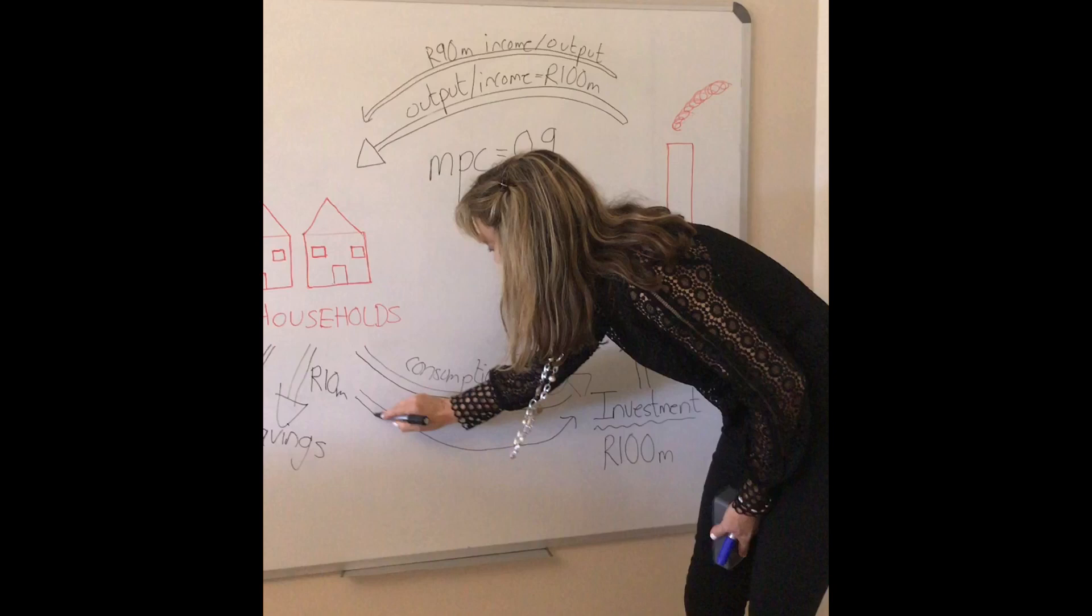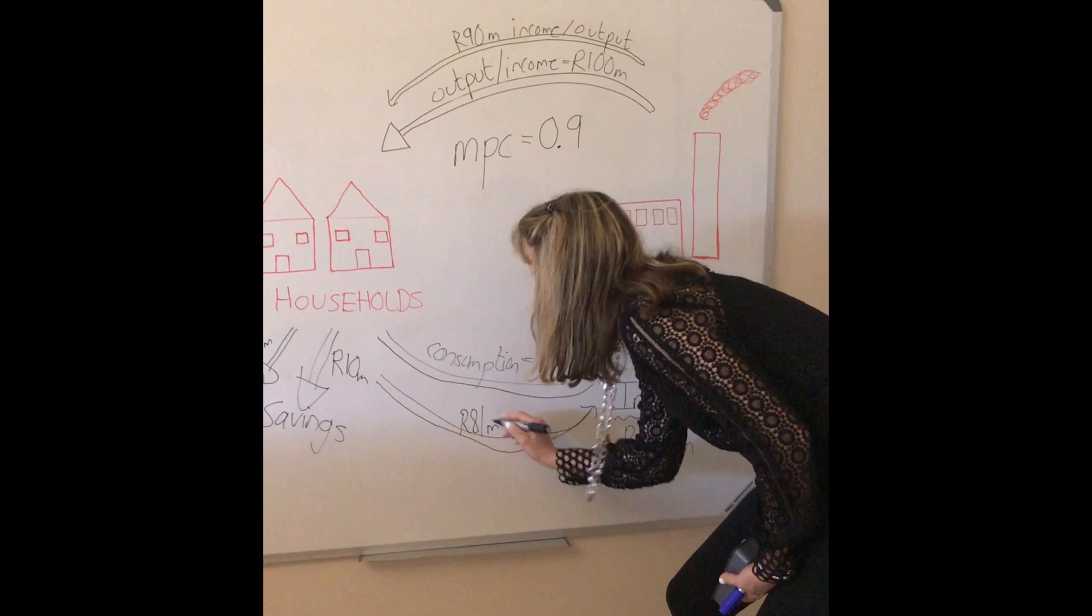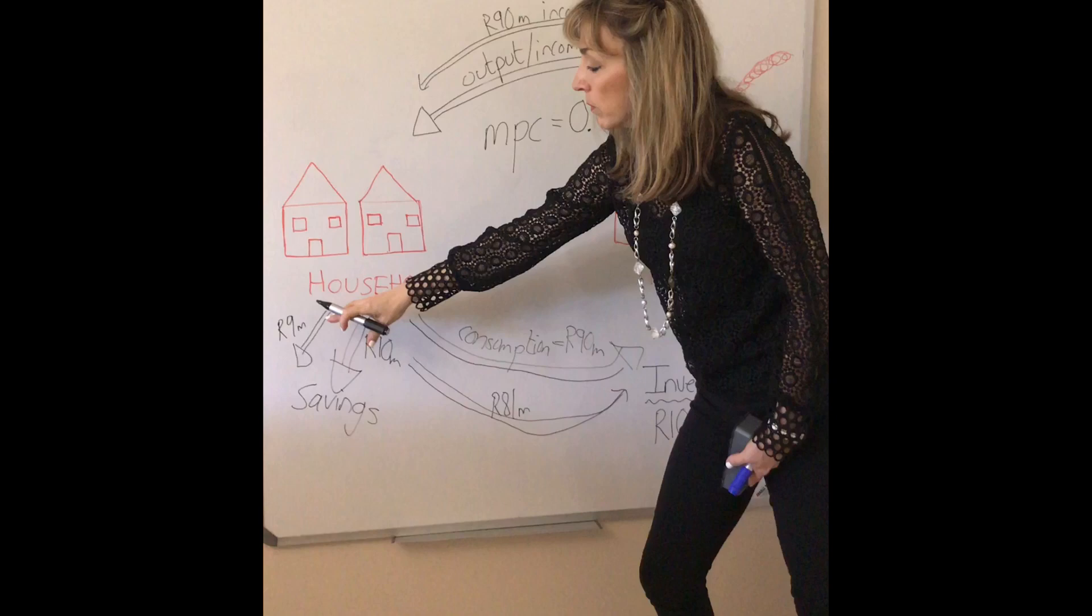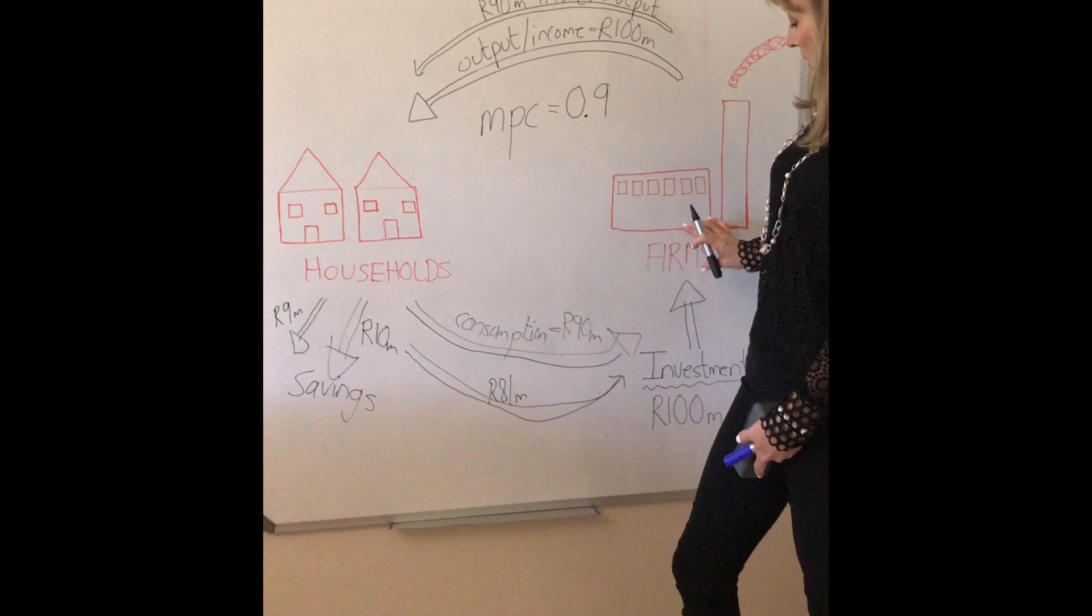81 million is going to flow back to firms as consumption expenditure. So of that 90 million rand, 0.1 of it, 10 percent, 9 million is the leakage of savings. 81 million flows back to firms that increase output by 81 million.